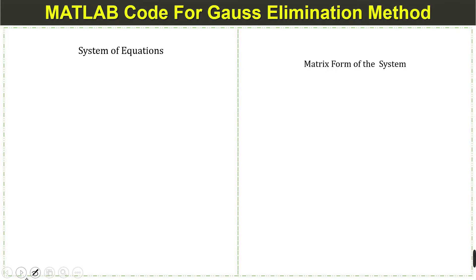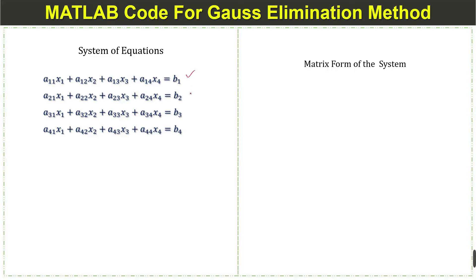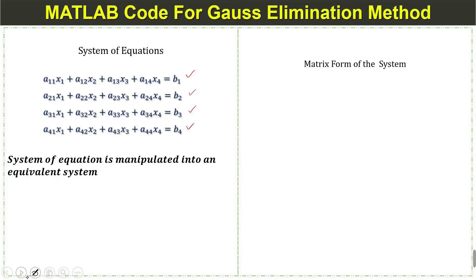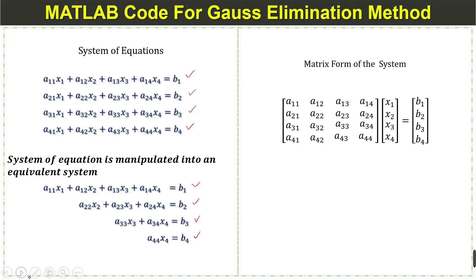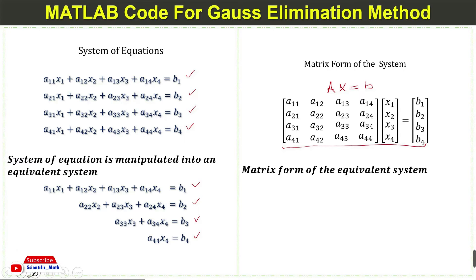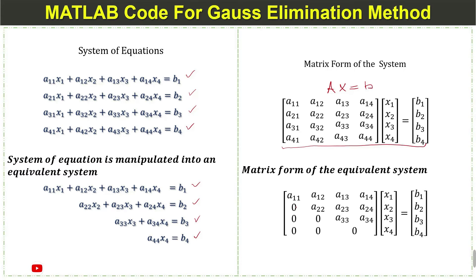For example, we have a system of 4 equations and we want to solve the system using the Gauss elimination method. When we apply the method, we get an equivalent form of the system, which we can write in matrix form as Ax = B. Applying Gauss elimination on this matrix gives an equivalent upper triangular form where all elements below the diagonal are 0.